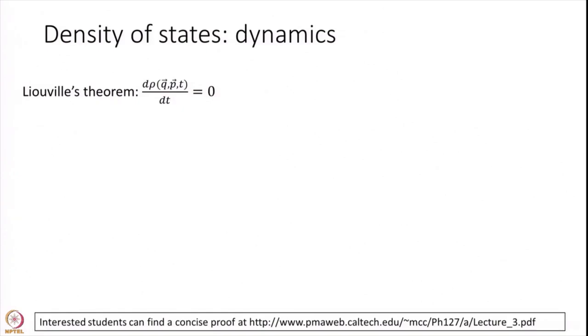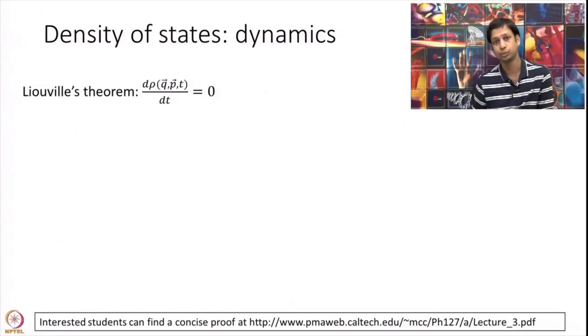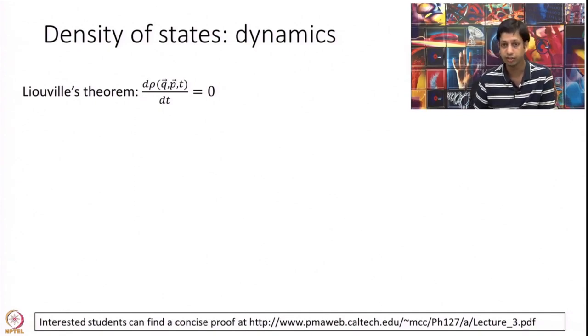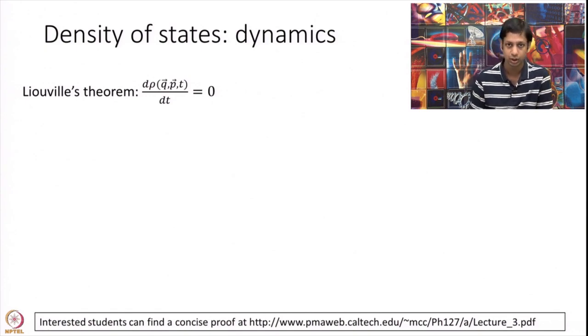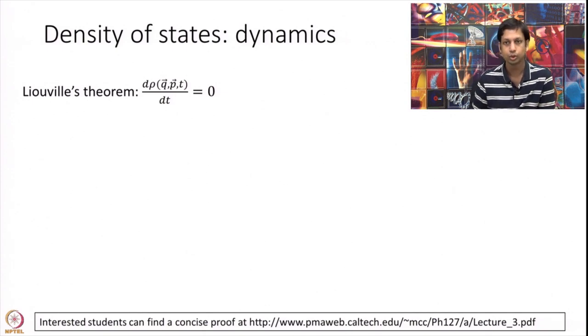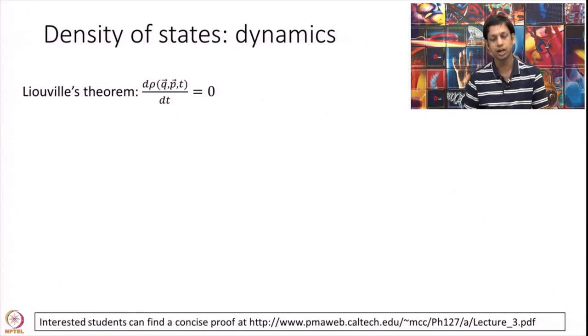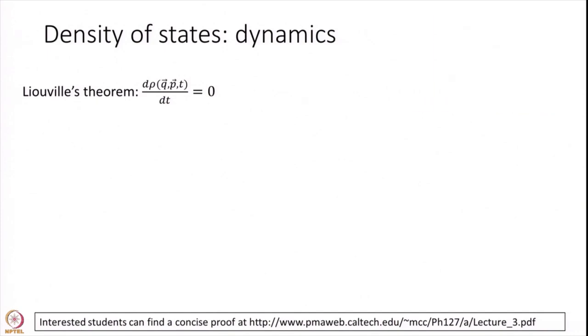What we want to find now is how does the density matrix change with time? I have told you how q and p change with time. But as I mentioned in the last module, we are really not interested in the dynamics of q and p completely because it is a very large space. I am more interested in finding the dynamics of rho. So we are going to assume one statement. The derivation is slightly mathematical and complex, so we are not going to cover that in this course. It is called the very famous Liouville's theorem.